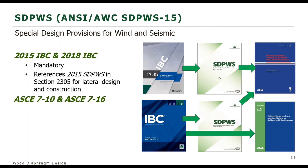The 2015 IBC references the 2015 wind and seismic provisions, which also references ASCE 7-10 — this is where we get our minimum design loads for buildings and other structures. When the 2018 IBC was published, it still referenced the 2015 wind and seismic provisions. As far as diaphragms specifically, there's literally no change related to diaphragms from ASCE 7-10 to 7-16, and there are only very minor changes that don't significantly impact the design of wood diaphragms.